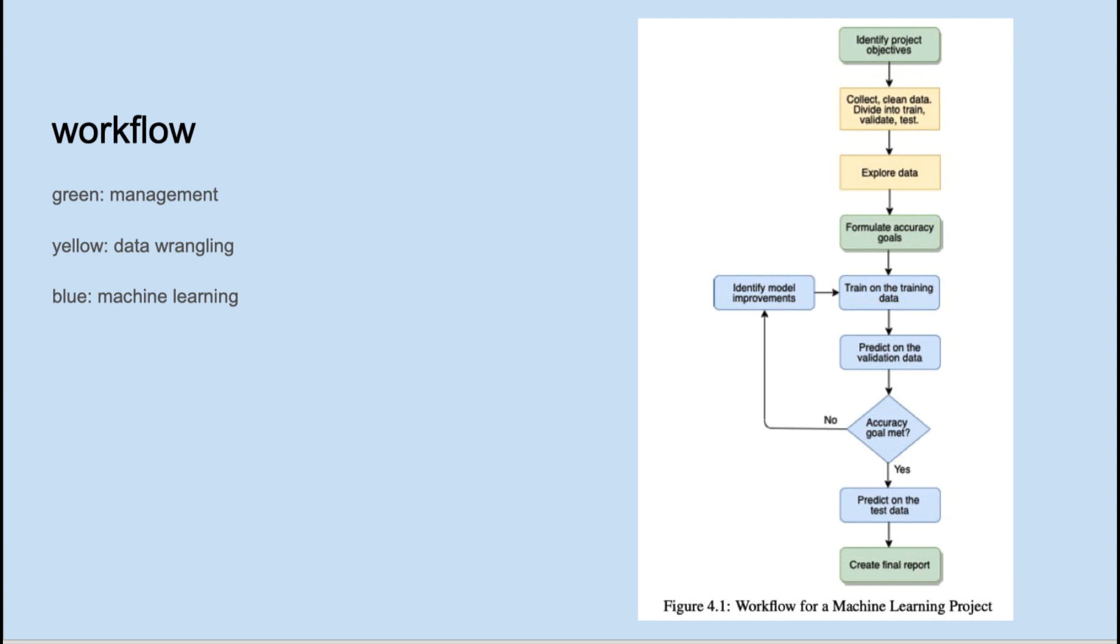I've outlined a typical workflow for professional machine learning projects. The green boxes are for management. Yellow boxes involve data wrangling. And blue involve the actual machine learning. Project control is top-down in most organizations. The departments and people funding the project call the shots. It's up to the team, however, to provide useful feedback in setting realistic objectives.